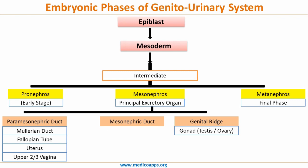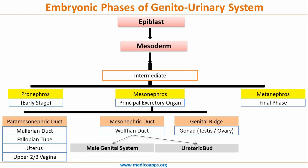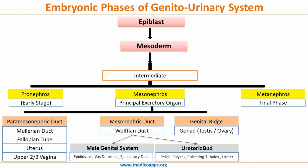Coming to the mesonephric duct, also called the Wolffian duct — it gives rise to the male genital system, consisting of the epididymis, vas deferens, and ejaculatory duct, and the ureteric part, which gives rise to the pelvis, the calyces, the collecting tubule, and the ureter.